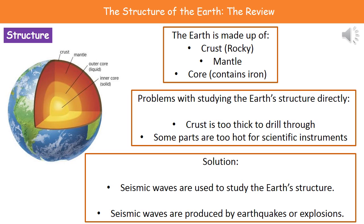If you imagine the fact that things like the mantle and the outer core are liquid, then what we find is that it's incredibly hot, so our scientific instruments would just be melted. We do have some solutions, and this is how we've actually got our understanding of the structure of the Earth. The first one is that we use seismic waves — we can use earthquakes which produce seismic waves naturally, or we can have explosions that create seismic waves. Then we can look and see how they travel through the Earth, and that gives us an idea about what bits are solid and what bits are liquid.